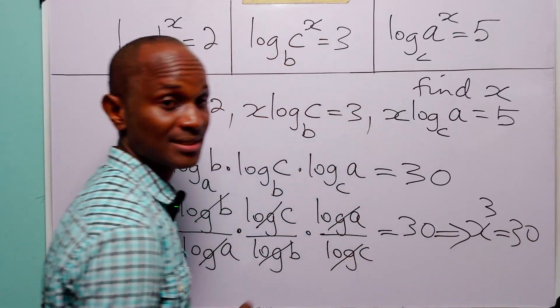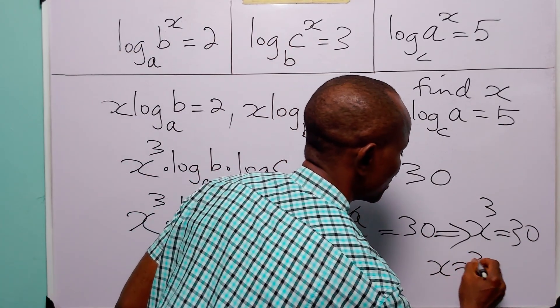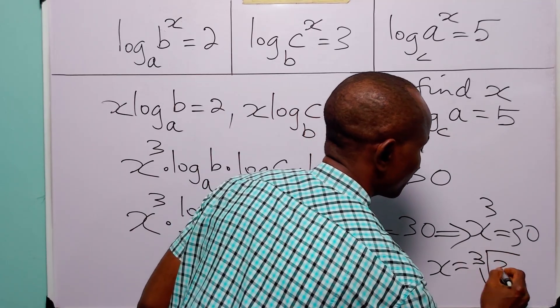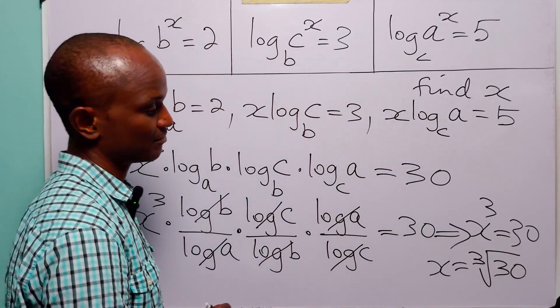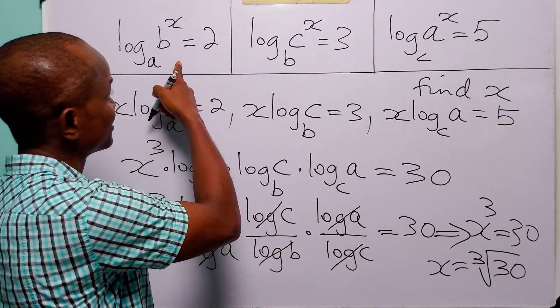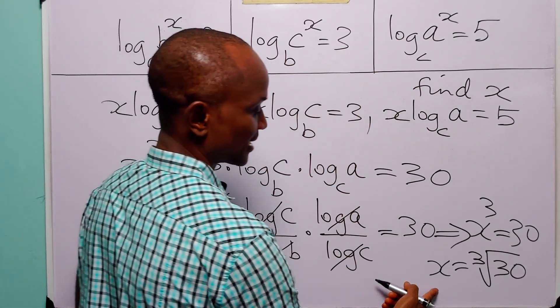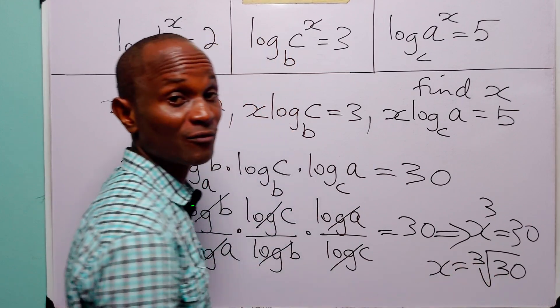And of course x is equal to the cube root of 30. So the value of x that satisfies all three logarithmic equations is x equal to the cube root of 30.